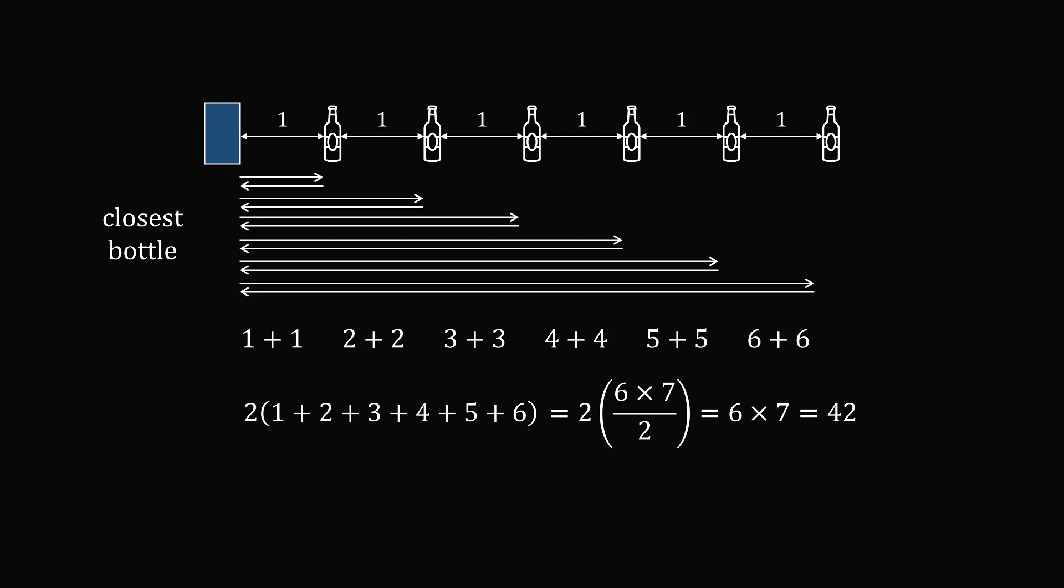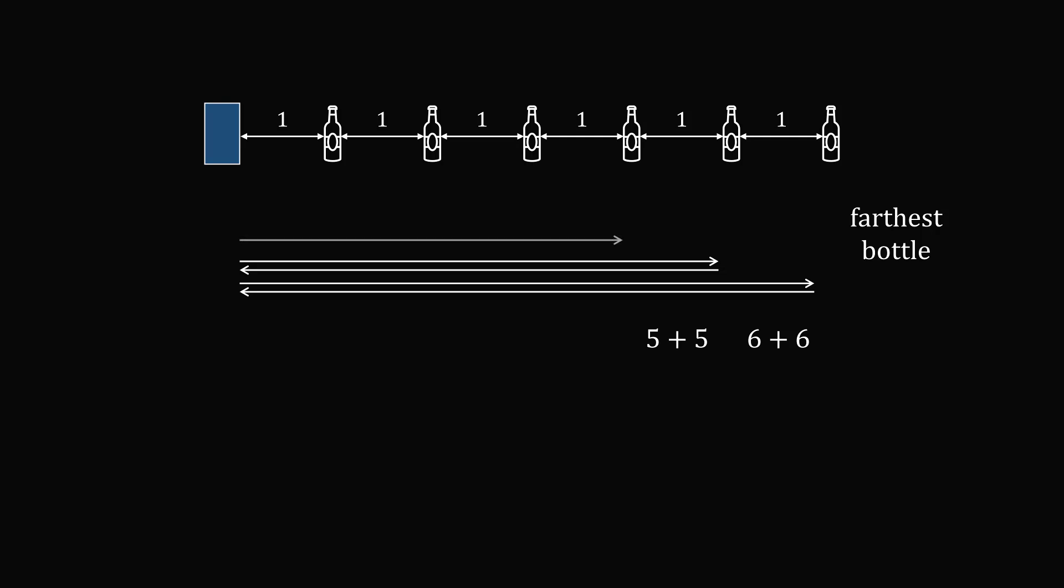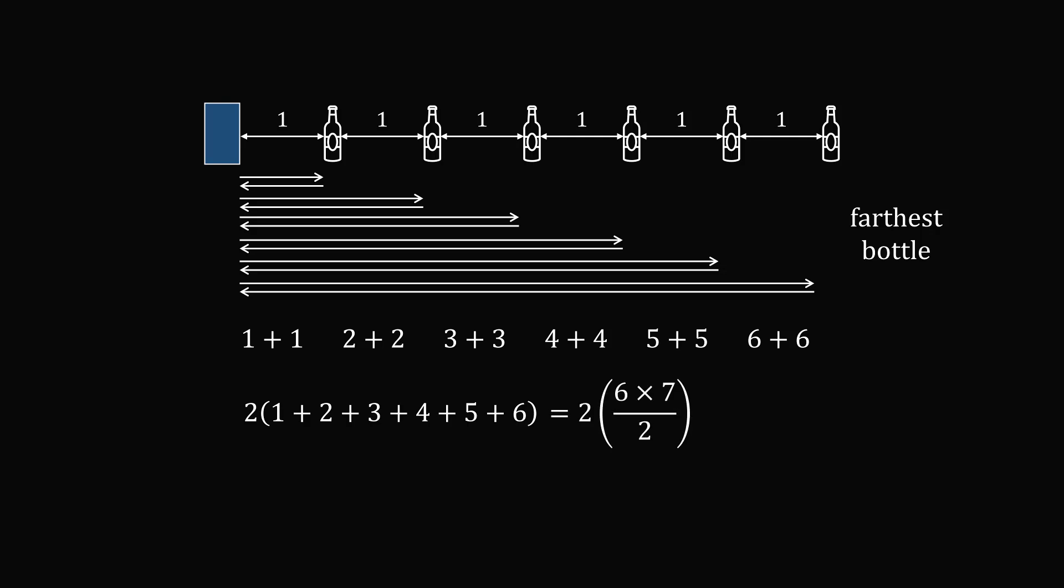Now, let's instead look at the other strategy. Suppose someone is always collecting the farthest bottle from the box. What is the total distance traveled in this case? Well, the contestant first goes to the very last bottle and then returns. This will be a distance of six plus six. Then the contestant goes to bottle number five and returns. This will be five plus five. And then we just proceed bottle by bottle, collecting the farthest bottle that has not been collected yet. And what happens when we do all of these distances? We end up with exactly the same sum. So this distance will also be equal to a total of 42 units.